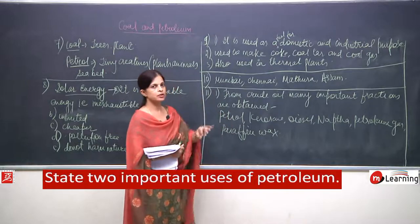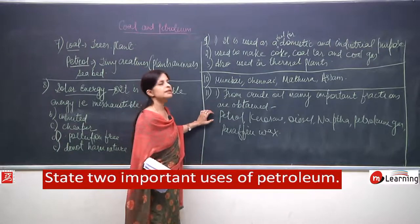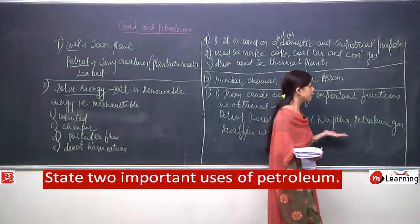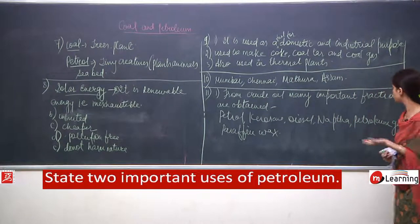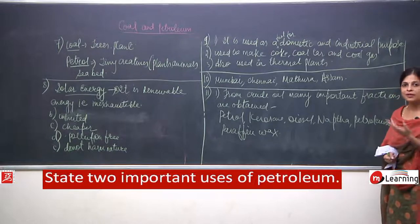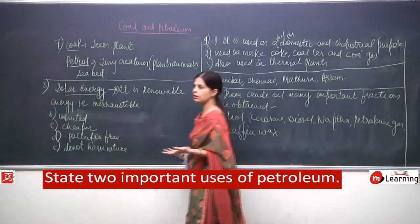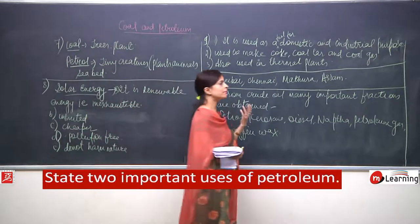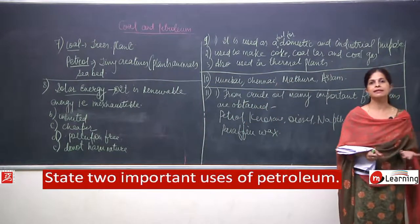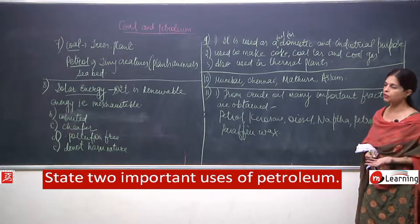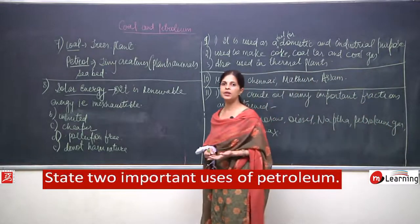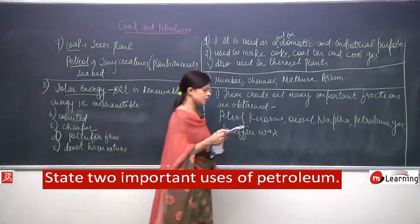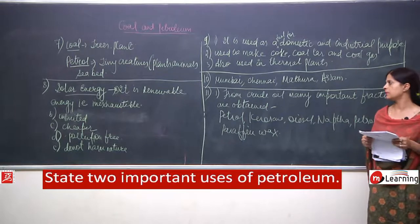Petrol, kerosene, and diesel are used as fuels. Naphtha is used to make insect repellents. Petroleum gas is used as a fuel. Paraffin wax is used in petroleum jelly, shoe polishes, dyes, synthetic petrol, varnishes, and many medicines. That is why crude oil is very important and is called black gold.